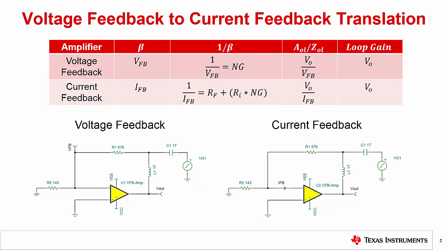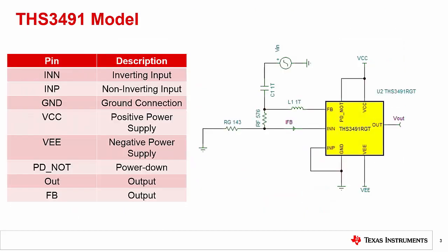The following slides will be a quick review in performing a stability analysis for an amplifier using TINA TI. Moving forward, we will be obtaining the phase margin of a THS3491 current feedback amplifier. It is clear that the model of this device does not have the typical shape of an amplifier, but rather contains a few more pins.